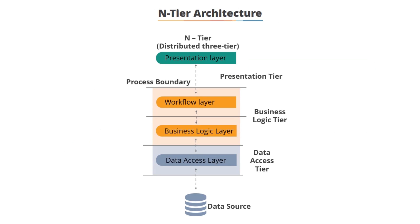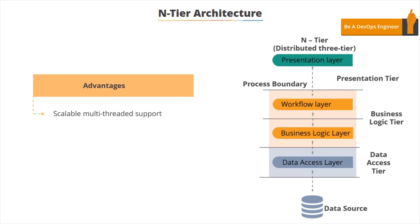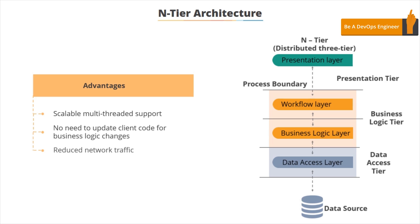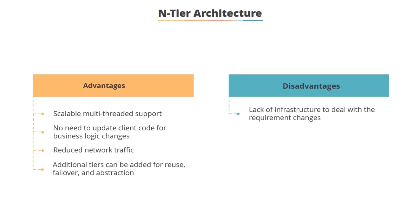Another very popular pattern is n-tier architecture, where n is a number which is usually three. The great advantage is it's completely multi-threaded, so the middle layers can be executed in parallel and multiple clients can each have their own threads executing. If the business logic changes, we don't need to change the user interface client code. Typically the client is a fairly thin client such as a web browser. We reduce network traffic dramatically because most of it happens between the layers, and we can add additional tiers for various purposes to add layers of abstraction and failover. The disadvantage is that if requirements change, we may need to change quite a bit in the middle tiers, and there are security implications, server availability, testability, and scalability issues.